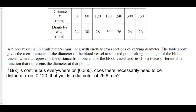A blood vessel is 360 mm long with circular cross-sections of varying diameter. The table above gives the measurements of the diameter of the blood vessel at selected points along the length, where x represents the distance from one end of the blood vessel, and b is a twice-differentiable function that represents the diameter at that point. If b is continuous everywhere from 0 to 360, does there necessarily need to be a distance x on 0 to 120 that yields a diameter of 25.6 mm?